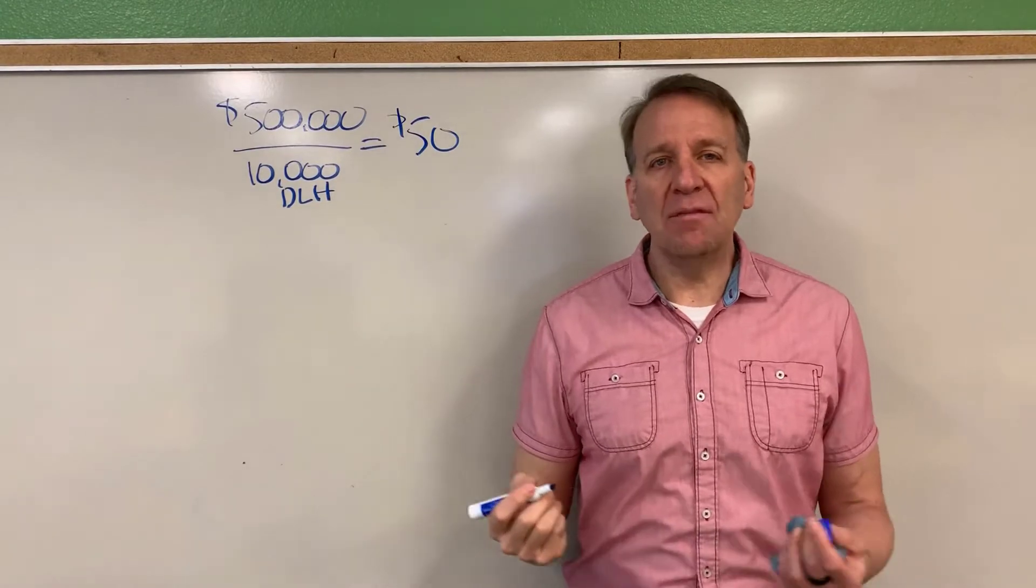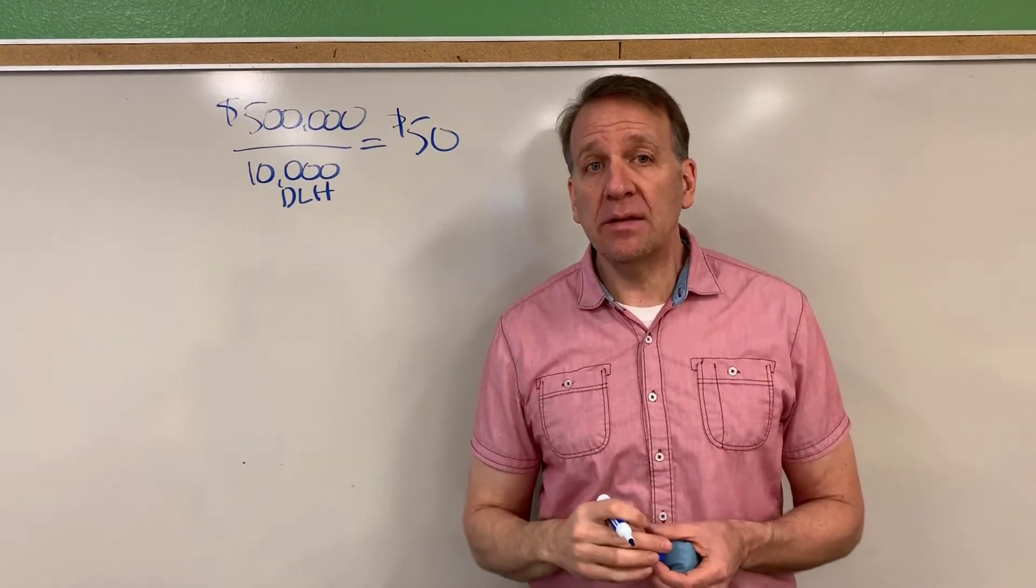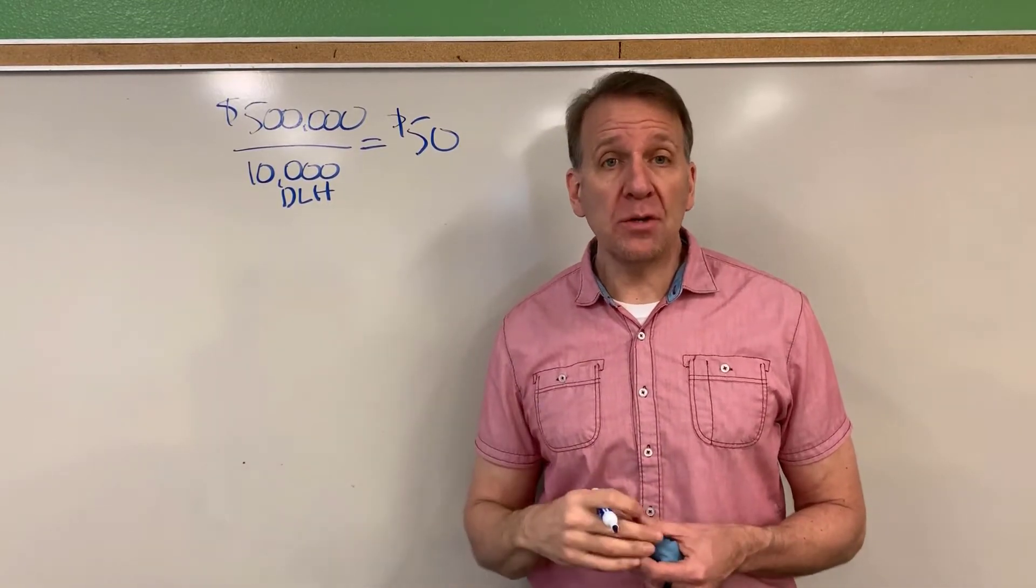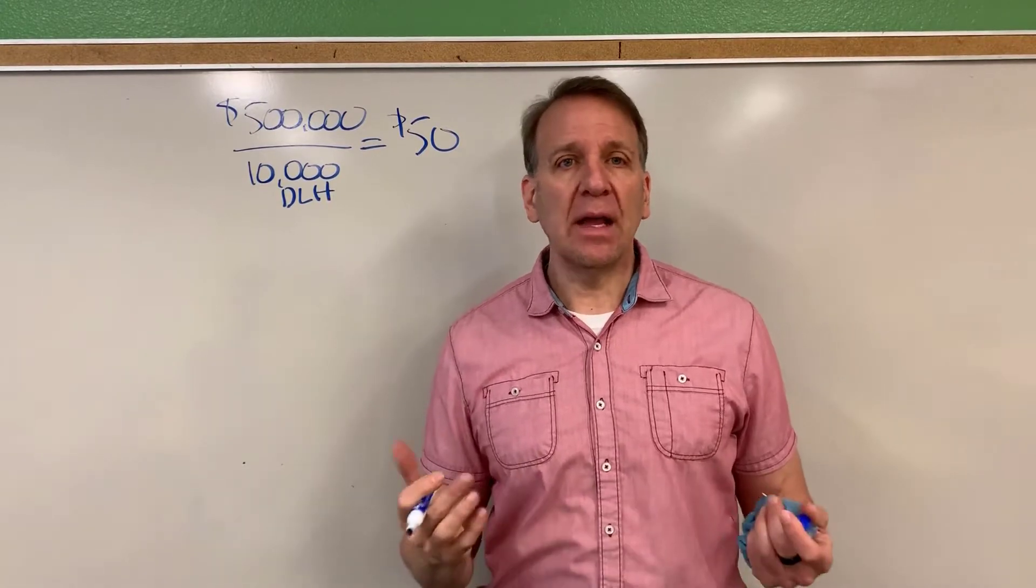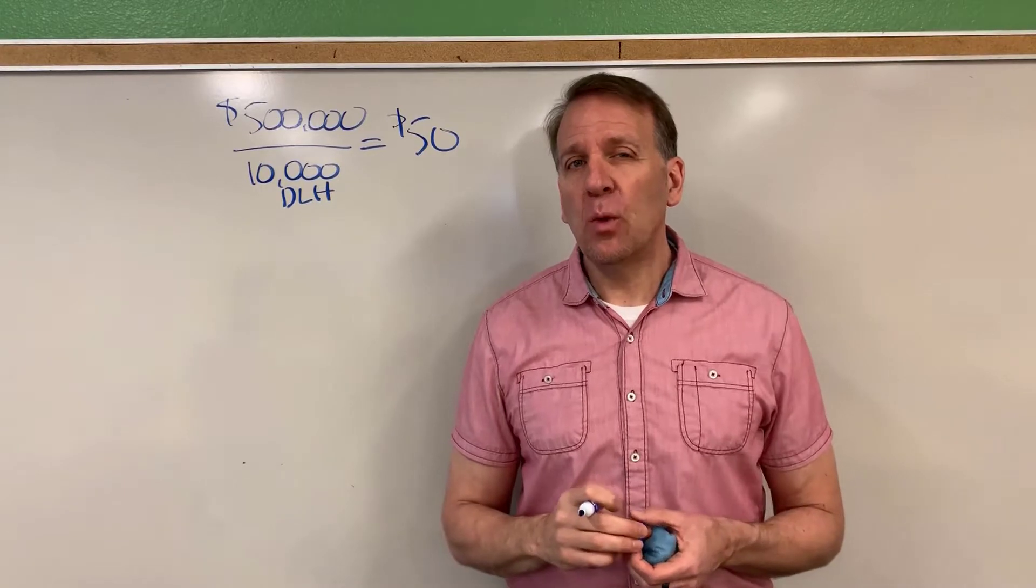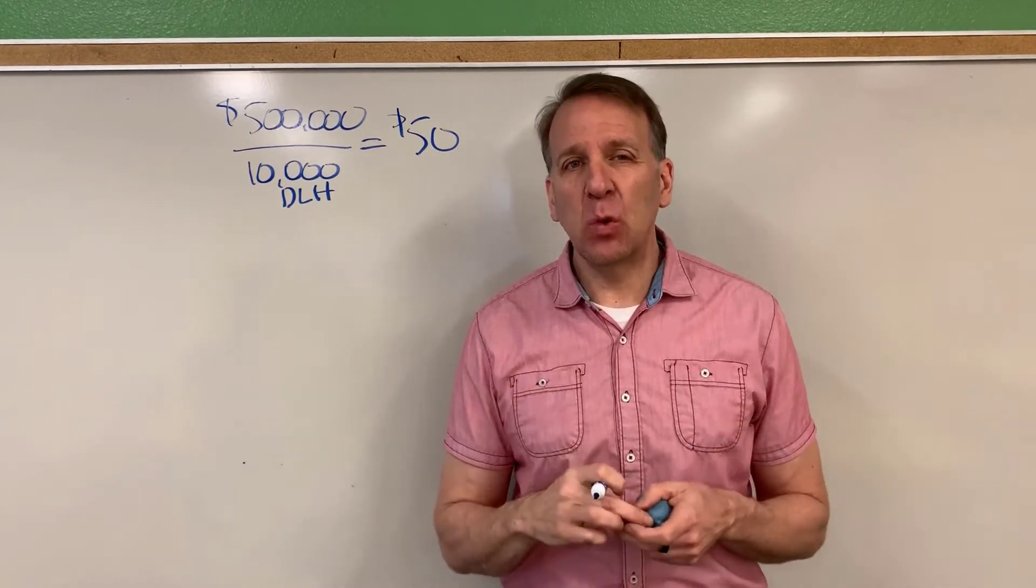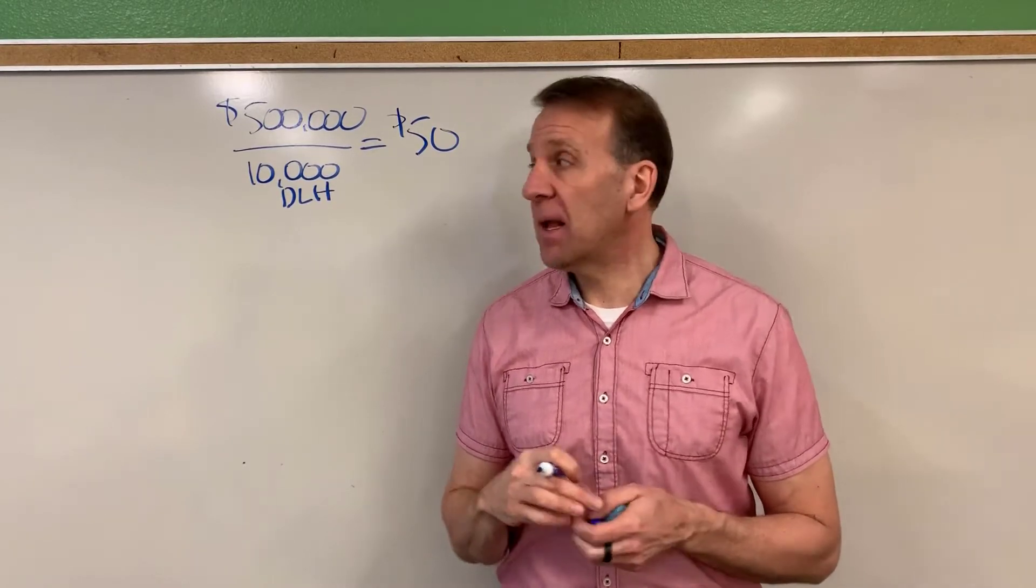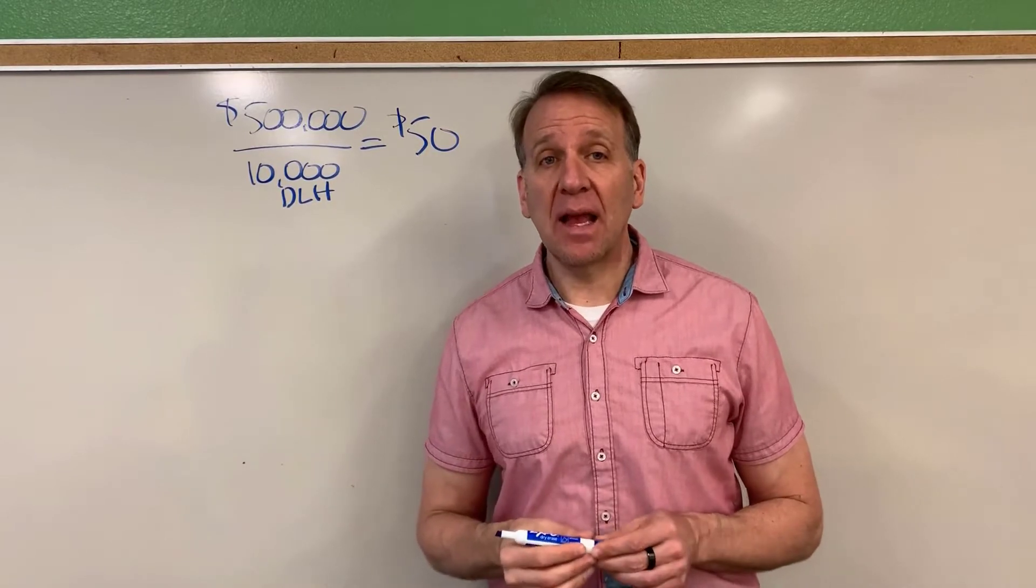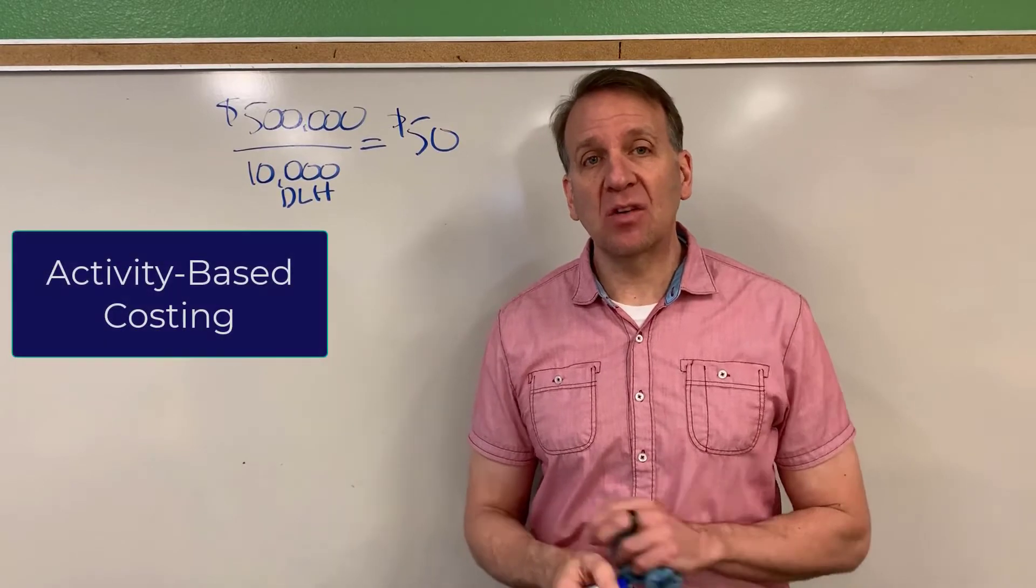Now this is fine if we have just one product. We only manufacture one product in our plant, then a single overhead rate, sometimes we call this the plant-wide overhead rate or the traditional rate, is fine. But if we manufacture multiple products, we might not be allocating overhead properly between those different items that we're manufacturing. Because it's possible that direct labor hours isn't the best way to allocate all of these overhead costs. That's why we might use activity-based costing.